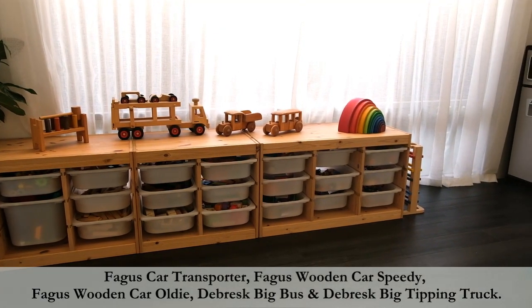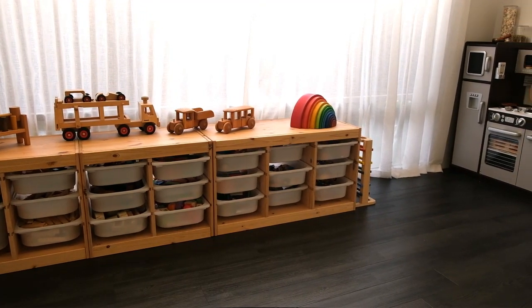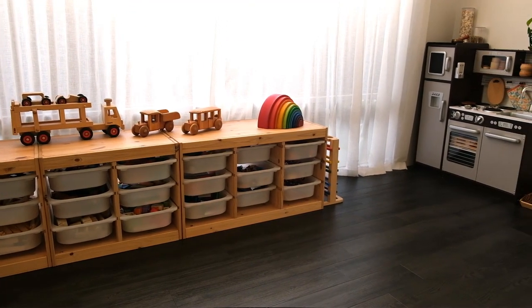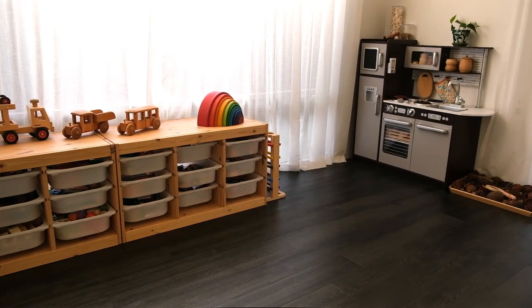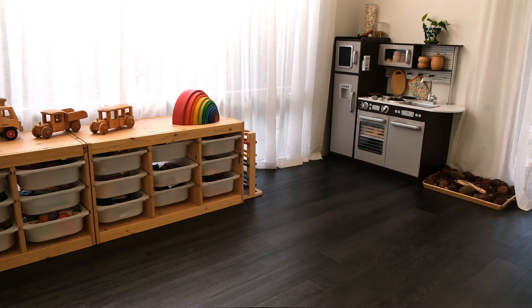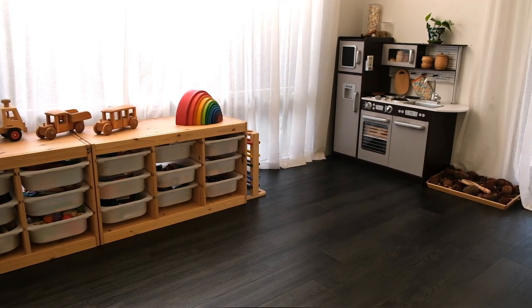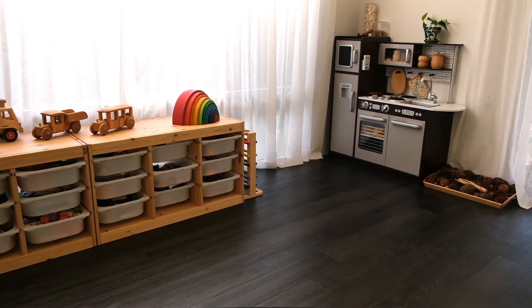These toys are neatly stored in three Trofast shelves from IKEA in our living room. Usually they come with grooves for nine single tubs in three columns, but we cut the one in the middle because we just didn't need those extra tub spaces.